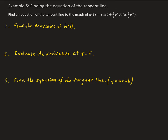So let's find the derivative of h with respect to t — h prime of t. We take the derivative of sine, which is cosine, so we have cosine t. Then we take the derivative of one-half e to the t. One-half is a constant, so we take it outside the differential operator. The derivative of e to the t is just e to the t, so we get one-half e to the t.